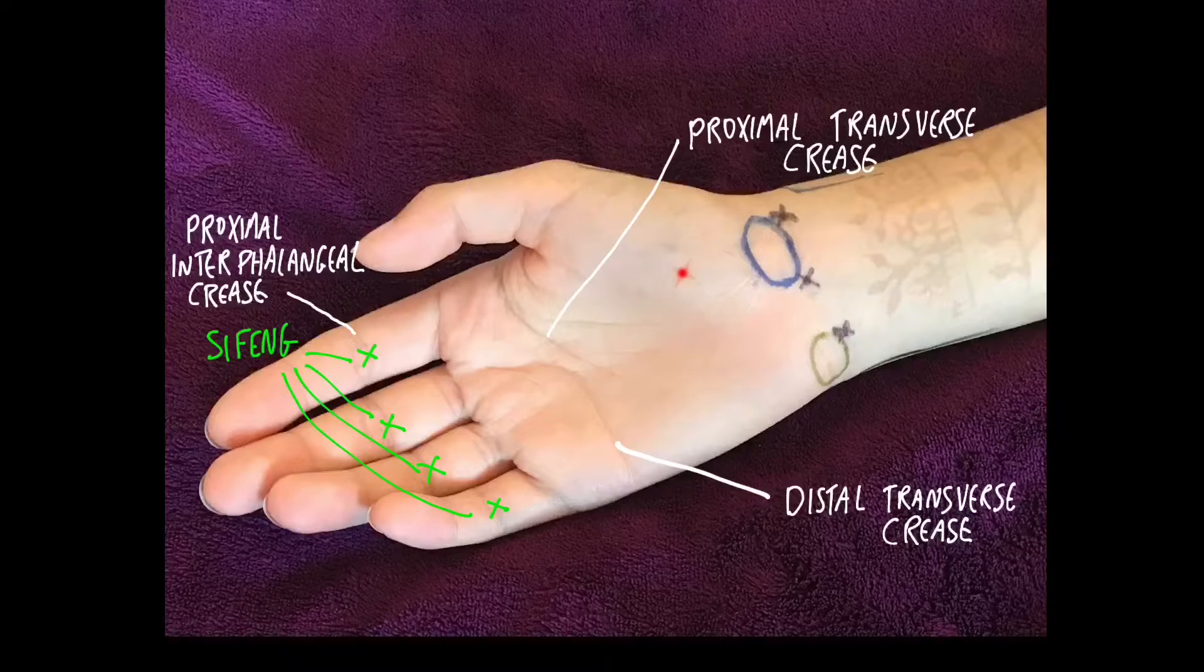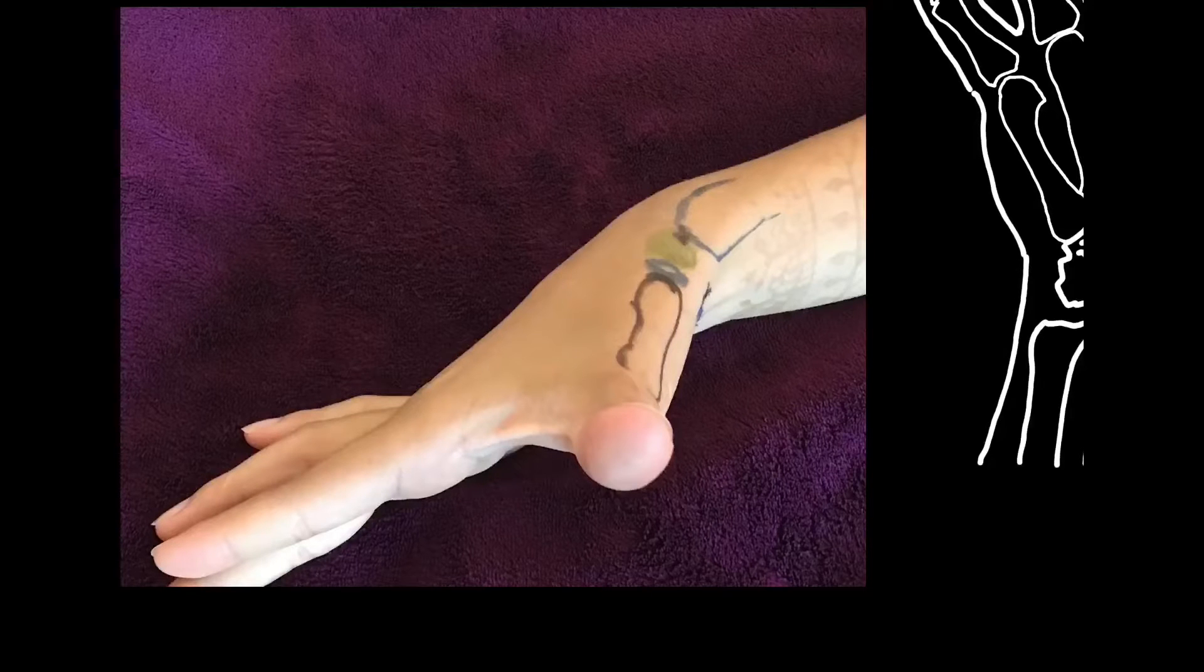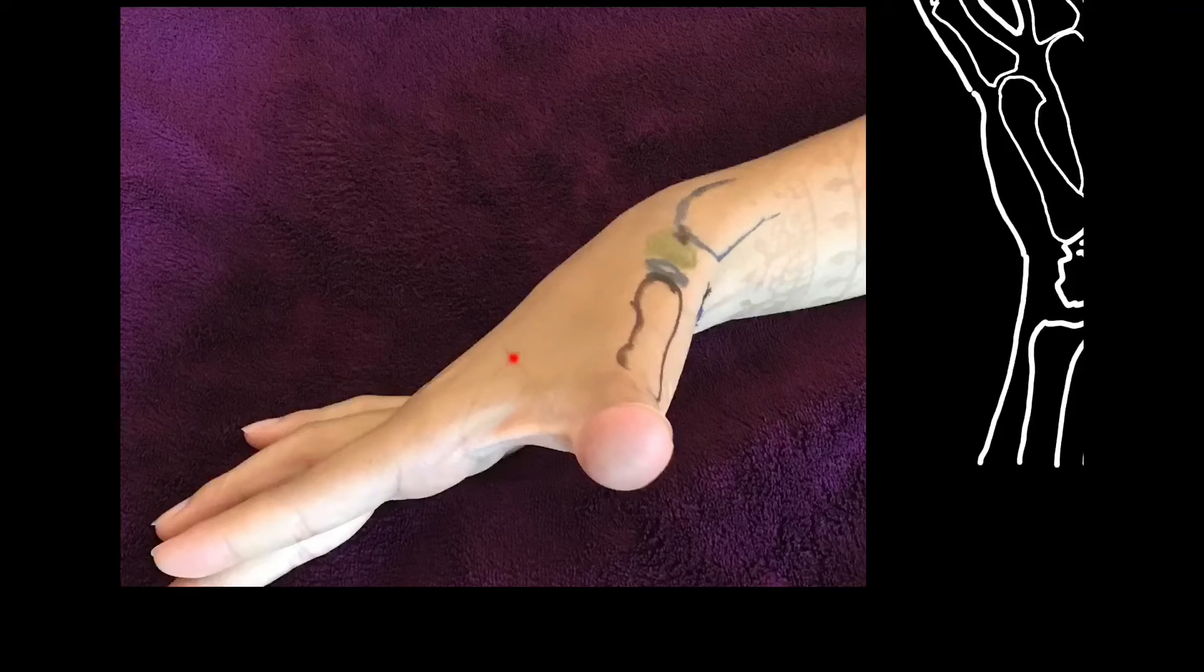A couple of things to remember with large intestine 4, a very big point with a lot of varied locations. It's usually between the seam of the two dorsal interosseous muscles. If you needle too close to the junction of the metacarpals, be aware of the artery that is deep to that area. If you're too close to the bone, be aware of the superficial nerve.